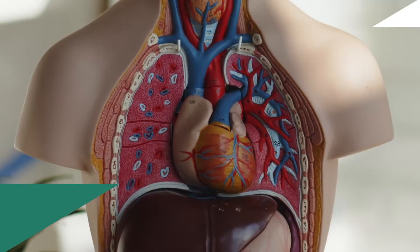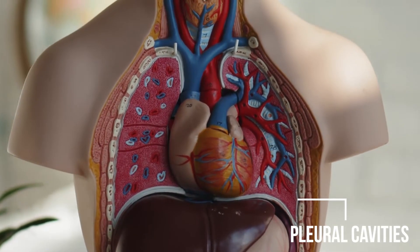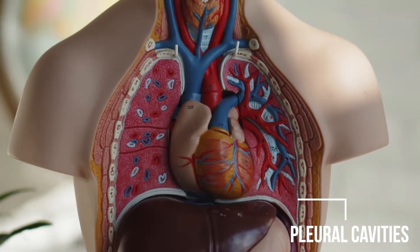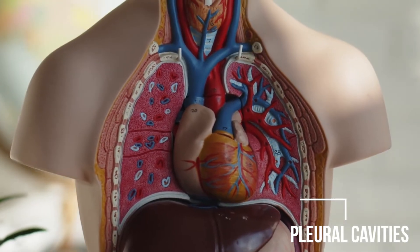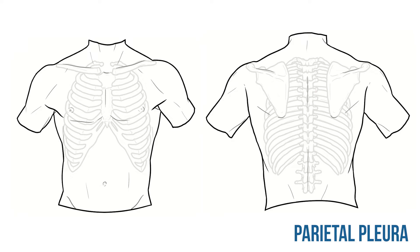The lungs are found inside a pair of pleural cavities, but they don't fully occupy those spaces. So before we can draw the lungs, we're going to add those cavities. More specifically, I want to draw the parietal pleura that lines each space.